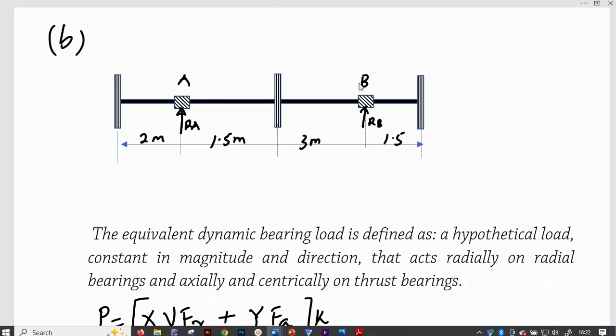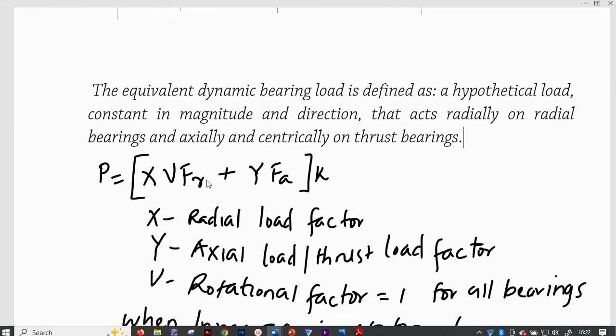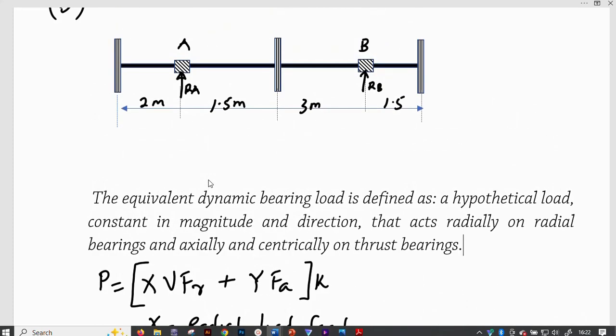Part B has a system that has a shaft, then pulleys that are mounted on a shaft that is rotating on bearings A and B with these distances. We are required to calculate the equivalent radial load for each bearing. Now, we need to determine or understand what this term means, the equivalent dynamic bearing load. It is defined as a hypothetical load constant in magnitude and direction that acts radially on radial bearings and axially and centrically on thrust bearing, or what we can call axial bearing.